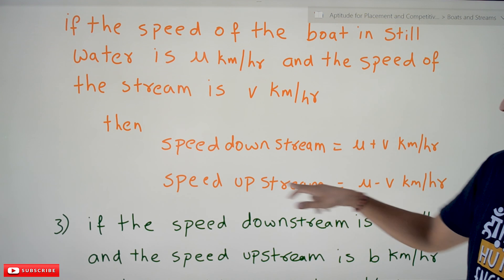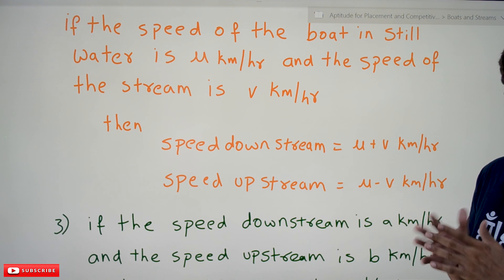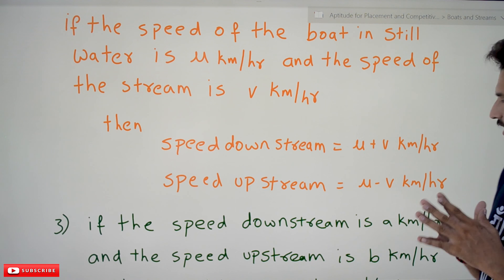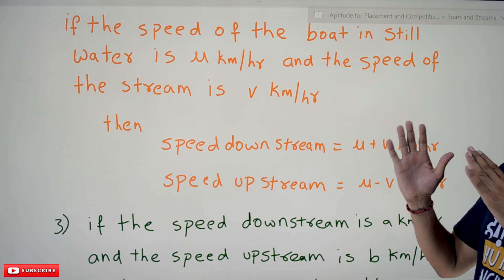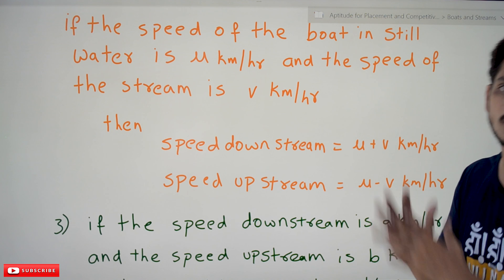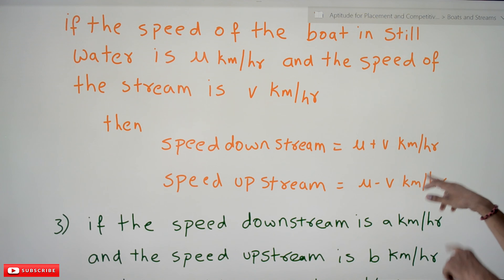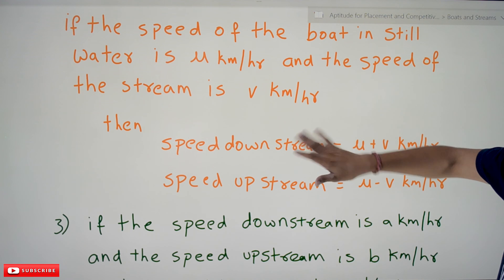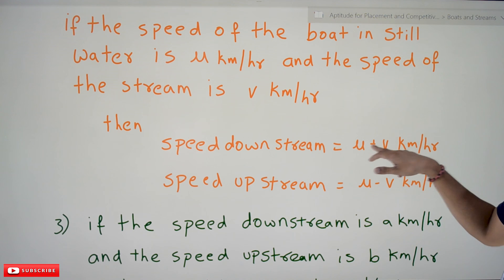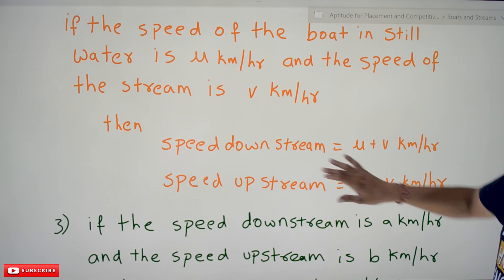Speed upstream means we are going against the water flow, so the water reduces the speed of the boat. Therefore, speed upstream is given as u minus v kilometers per hour. So these are the basic formulas: speed downstream is u plus v, and speed upstream is u minus v.